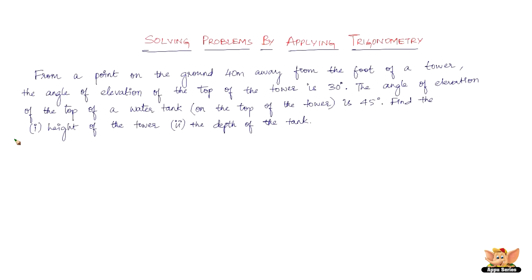In this video, let us continue to solve problems by applying concepts of trigonometry. We've got a problem here which reads like this: from a point on the ground 40 meters away from the foot of a tower, the angle of elevation of the top of the tower is 30 degrees.